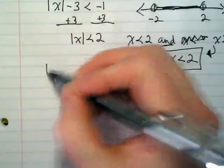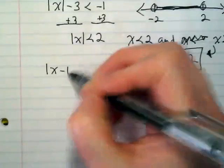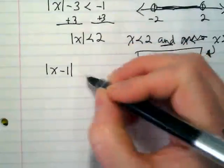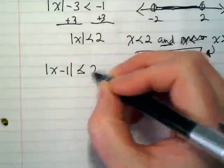Let's try one that's a little bit more complex: x minus 1 inside the absolute value is less than or equal to 2.